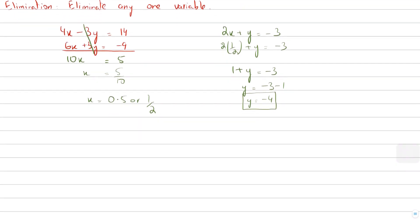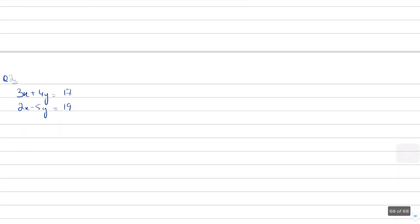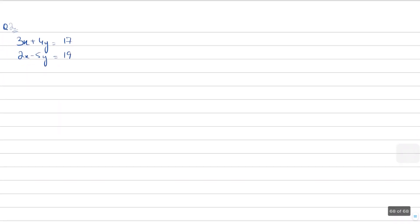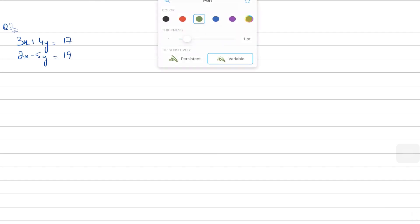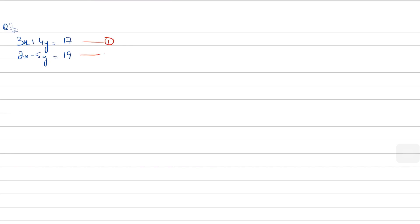So there we have it — we now have the value of y as well. In case this concept isn't clear, we're going to do another question. Here we have two equations: 3x plus 4y equals 17, and 2x minus 5y equals 19. Let's say I want to eliminate x this time. The coefficient of x is positive 3 in the first equation and positive 2 in the second.